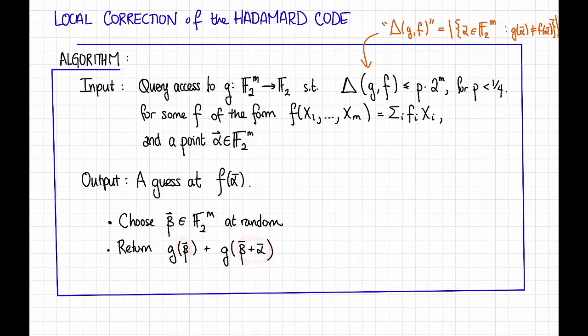We're going to take those two queries, we're going to add them together, and we are just going to hope for the best and hope that they are equal to f(α). It might not be immediately clear why we would hope for that. We'll come back to that in just a moment. But for now, I claim that this local correction algorithm indeed works.